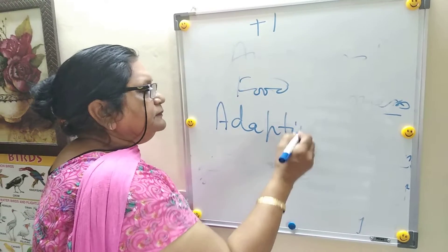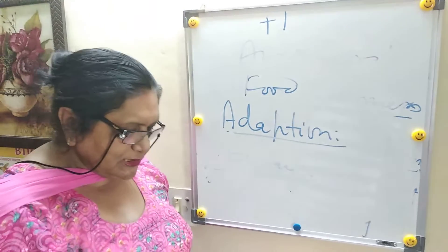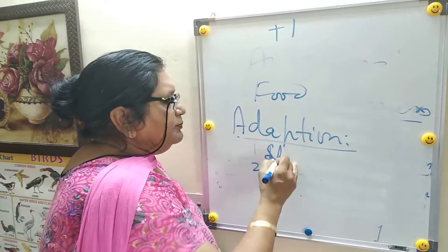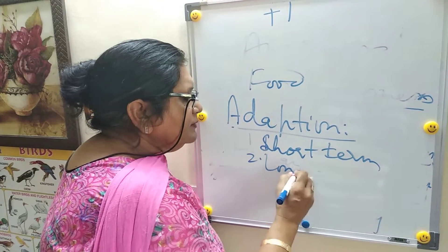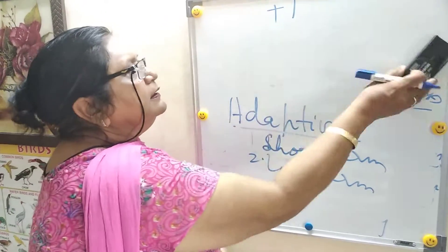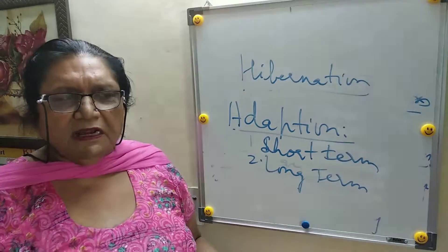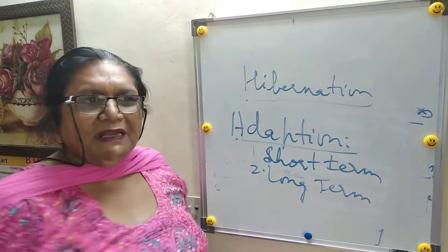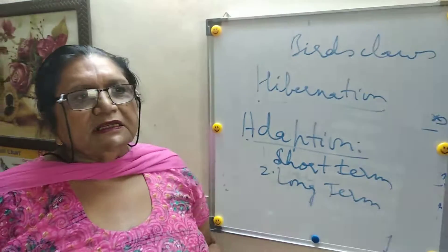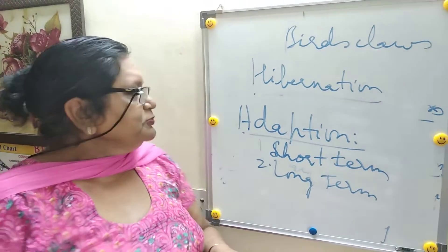The next very important property is adaptation. All living beings adjust themselves to the surrounding. There are two types: short-term and long-term adaptation. Short-term adaptation is for a short time — for example, hibernation, when animals hibernate because they cannot adjust to the environment. Long-term adaptation includes things like the claws of birds to catch prey, or humans having an opposable thumb to hold things.